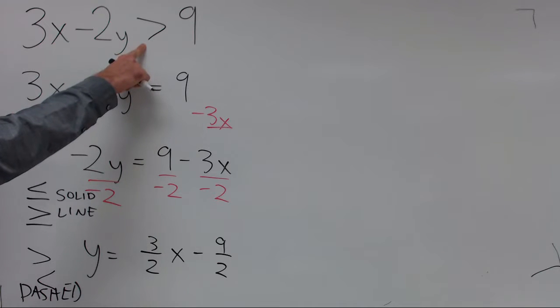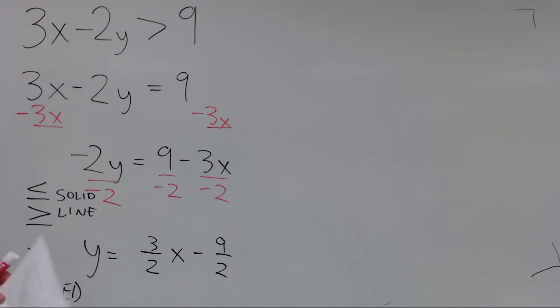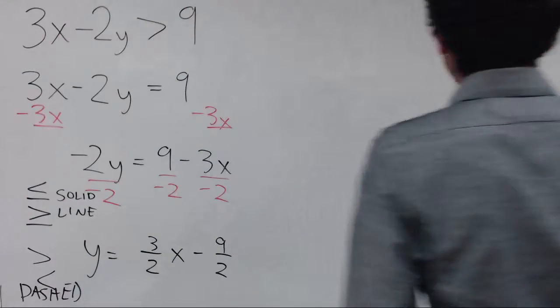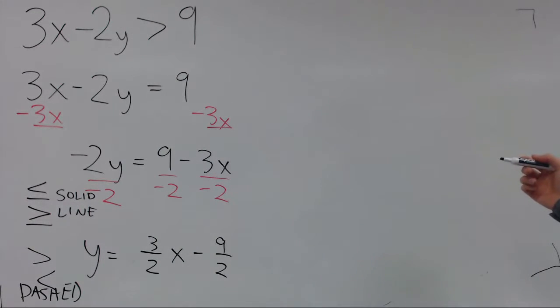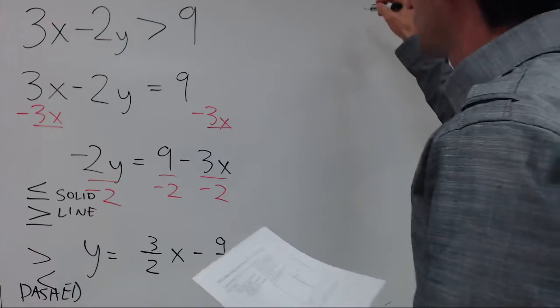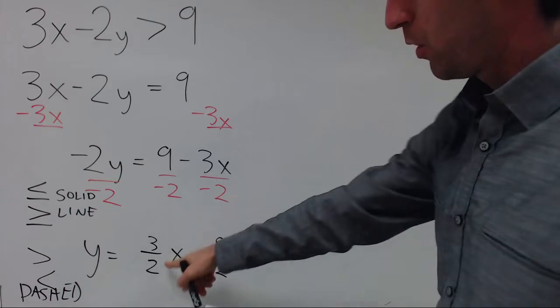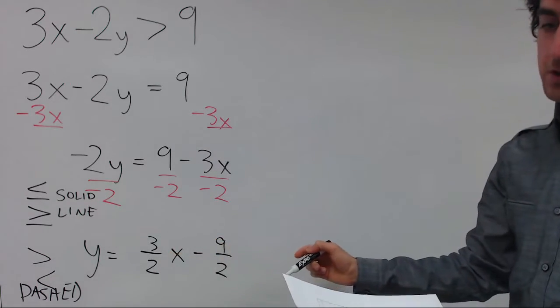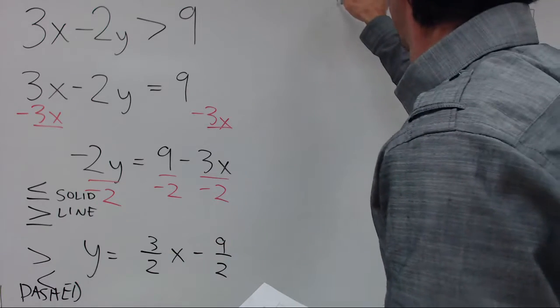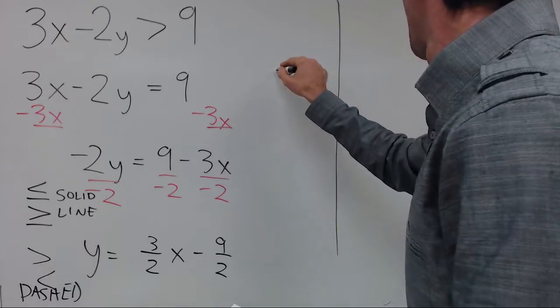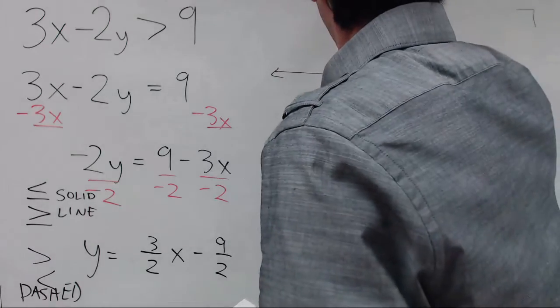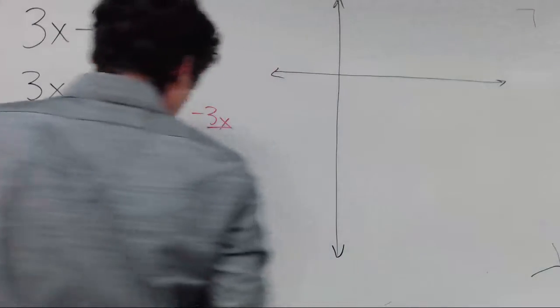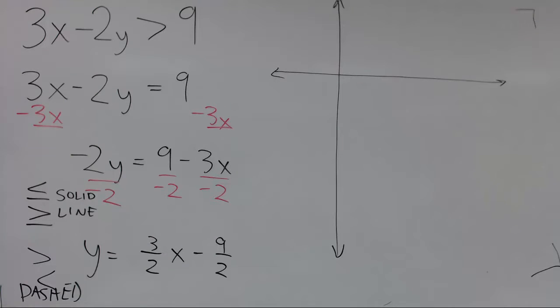Now we have a greater than symbol, so we're going to be using a dashed line for the boundary line. We need to start the graph at negative 9 halves, and then we're going up and to the right. So we're focusing mostly on quadrant 4. And we're working with halves, so I'm going to make the tick marks in both directions go by halves.